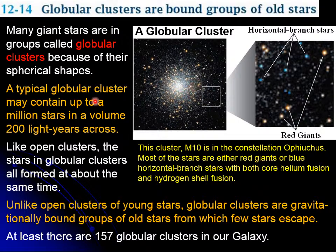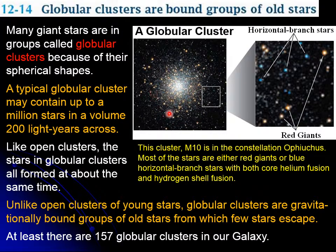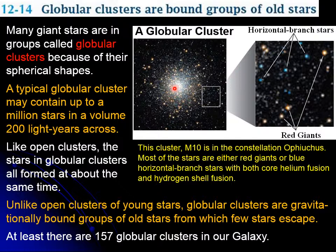The size of a globular cluster is up to about 200 light years across. All the stars in a cluster were formed at about the same time. Unlike open clusters — which are not bound and contain young stars — globular cluster stars cannot escape, so they are gravitationally bound. In our own galaxy, the Milky Way, we have found 157 globular clusters.